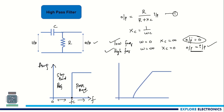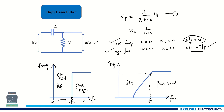For low-frequency signals the output will be 0. Looking at the practical frequency response, by taking amplitude on the Y-axis and frequency on the X-axis, we get the cutoff frequency of the high-pass filter somewhere here. The region above the cutoff is the pass band, and the region below it is the stop band.